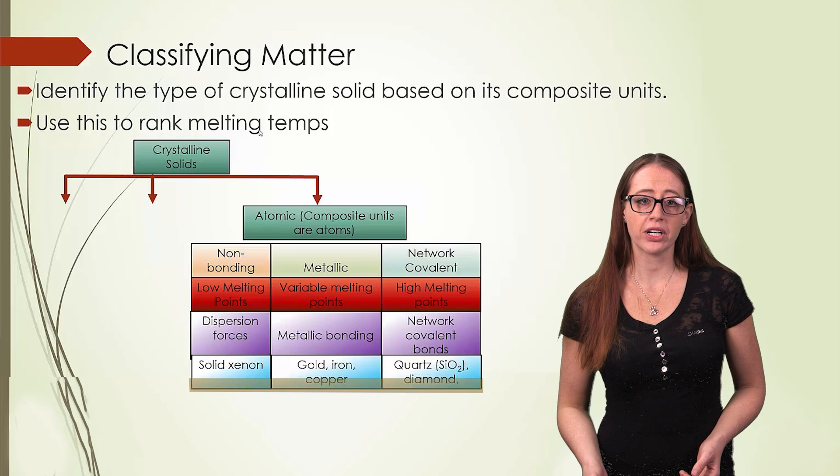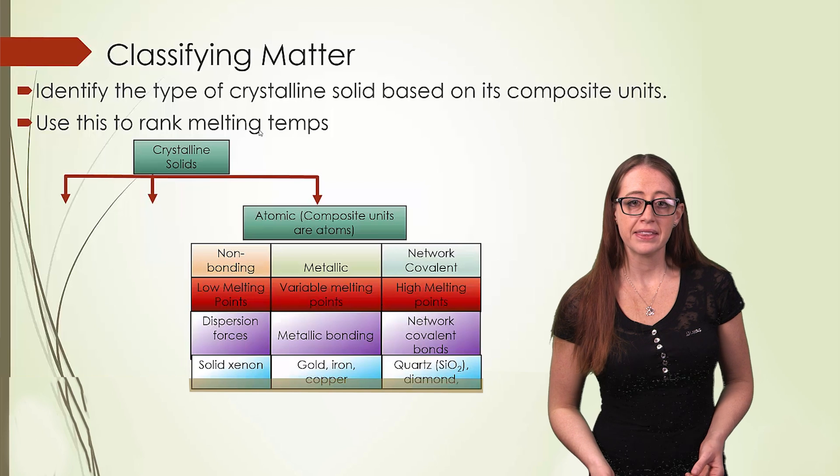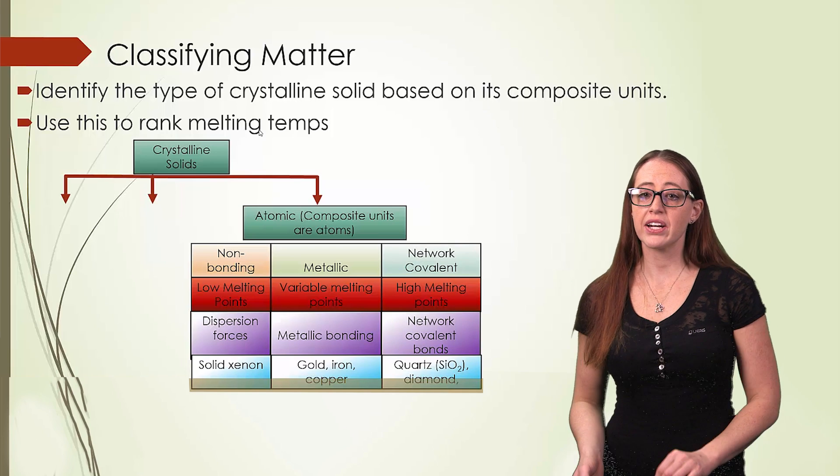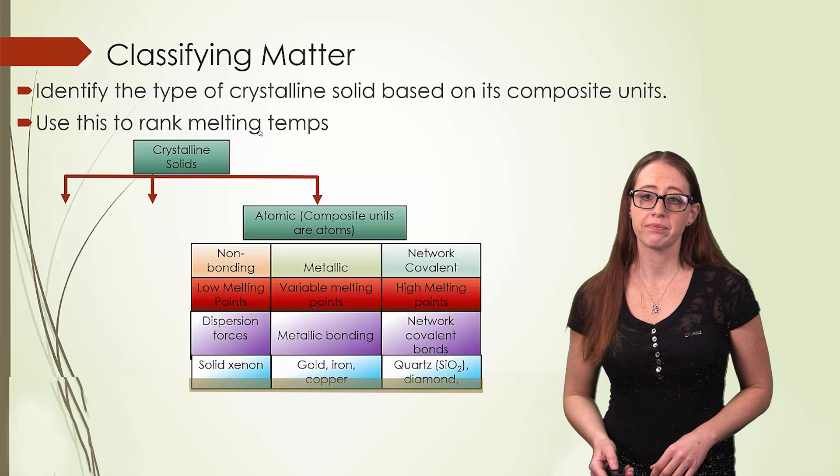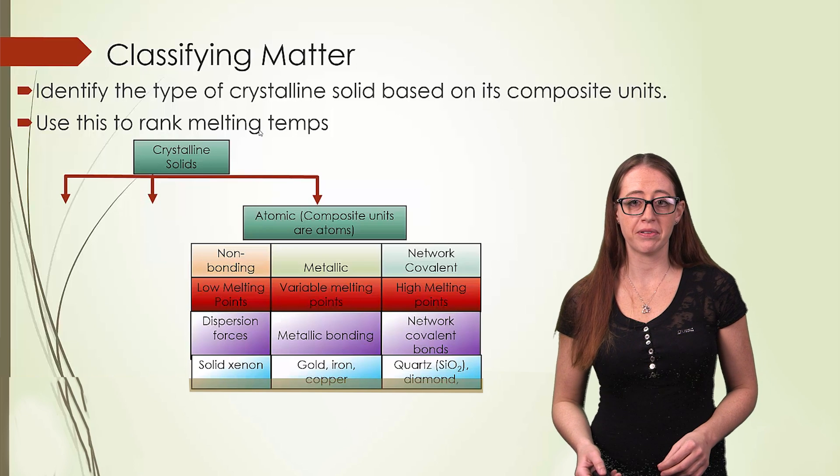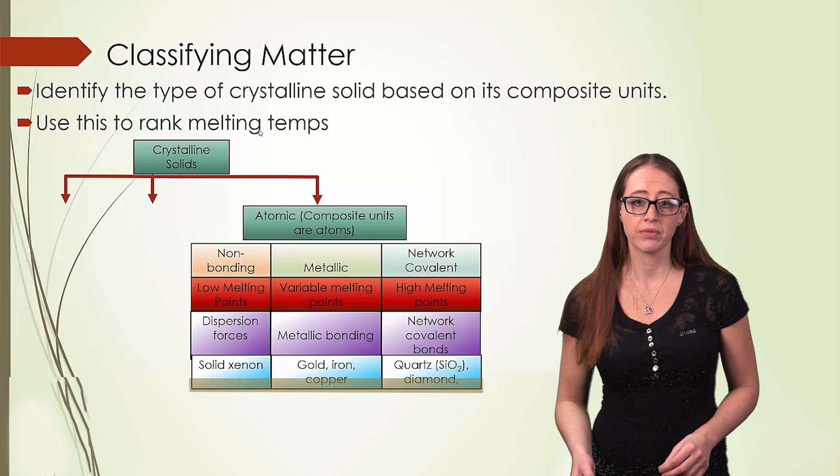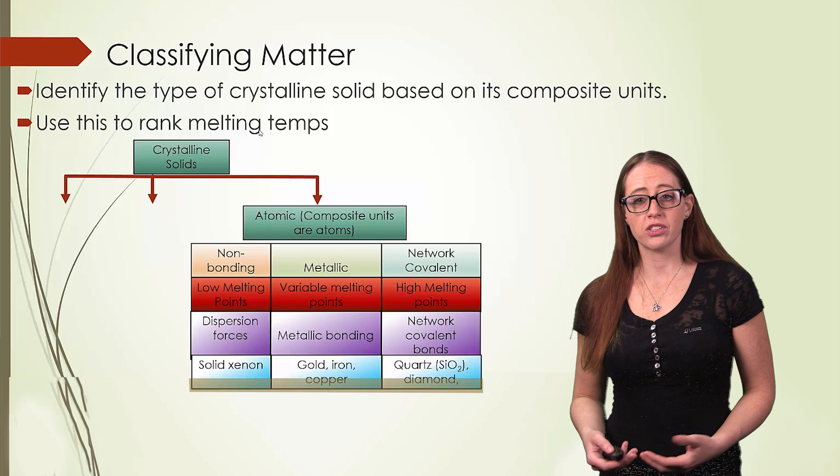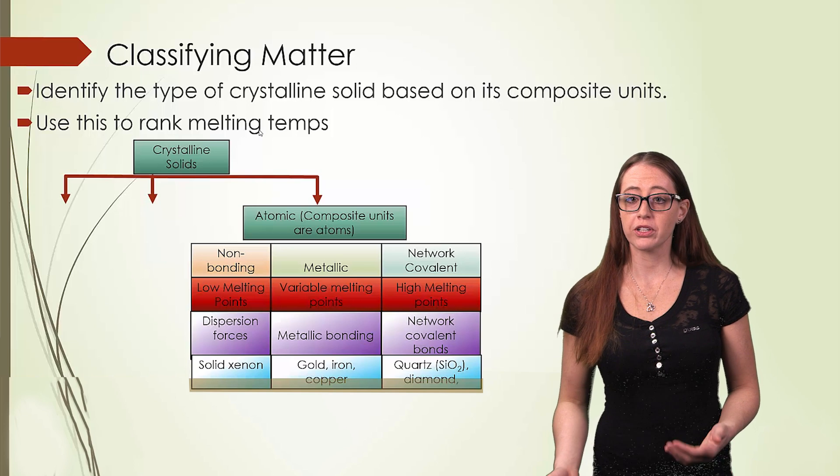Finally, we have network covalent compounds. These have covalent bonds that are linking each atom together. They generally have very high melting points because the covalent bonding is so strong. These include things like quartz, or diamond, or graphite.